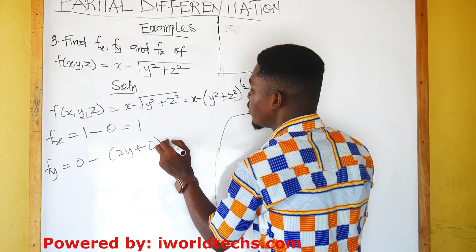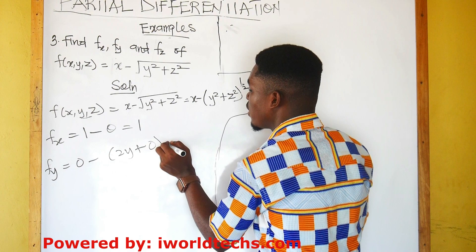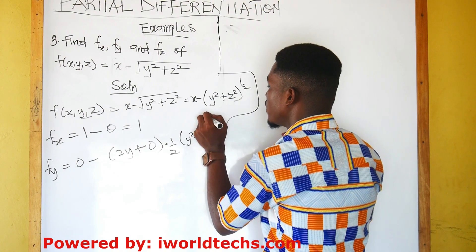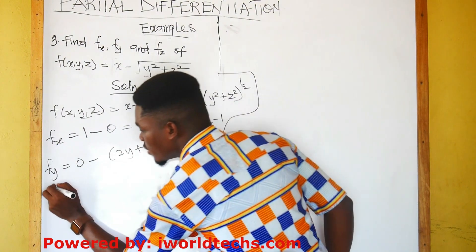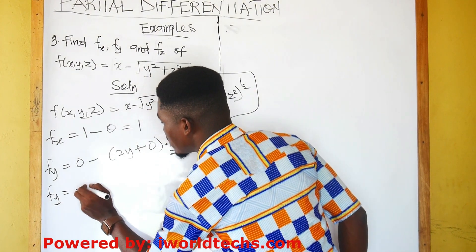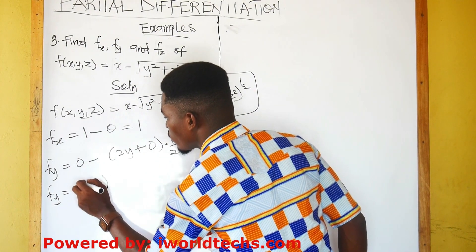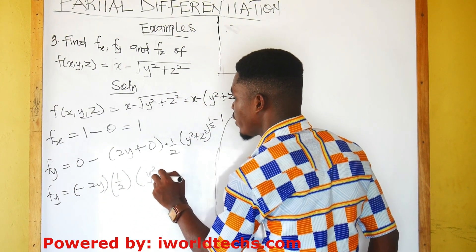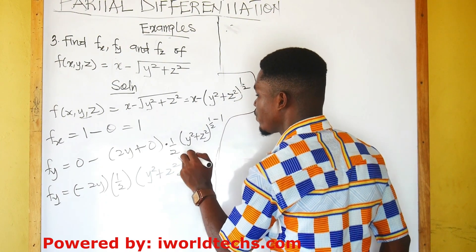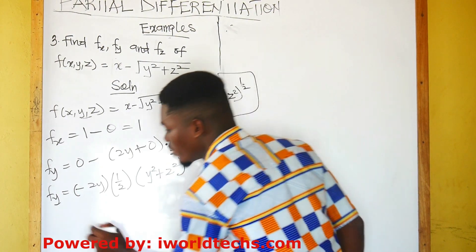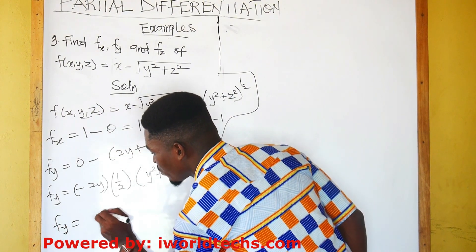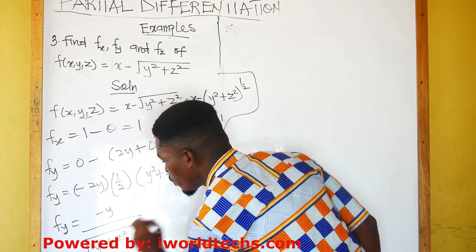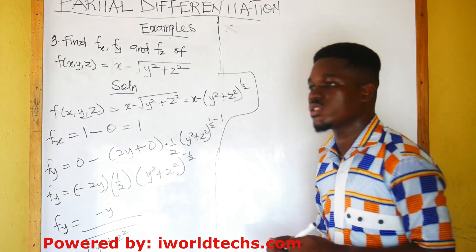Then we differentiate the whole function and multiply by half of y squared plus z squared to the exponent half minus 1. This gives negative 2y multiplied by half, times y squared plus z squared to the negative half. Therefore, f subscript y is given by negative y divided by the square root of y squared plus z squared.